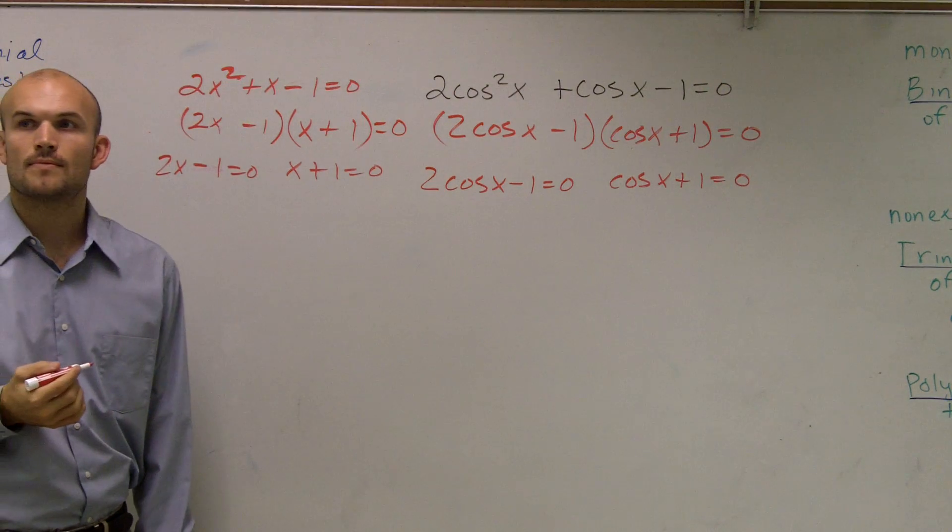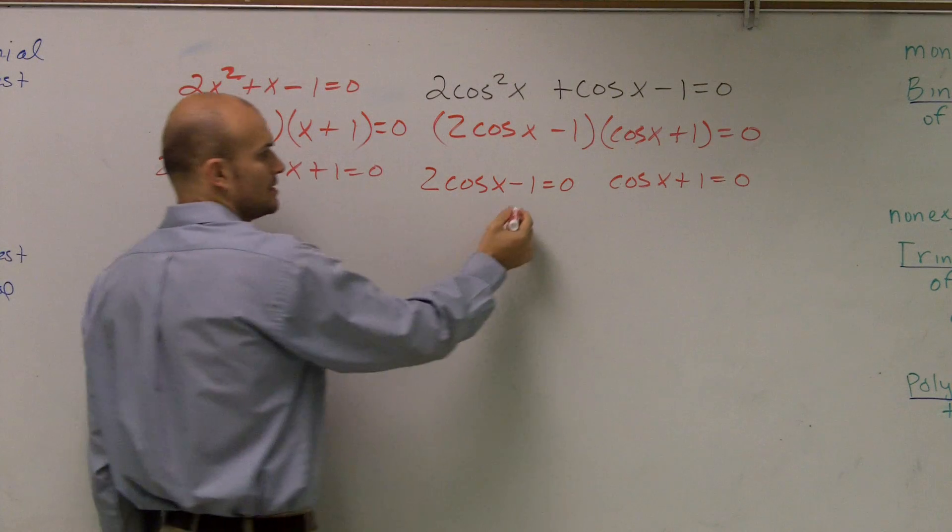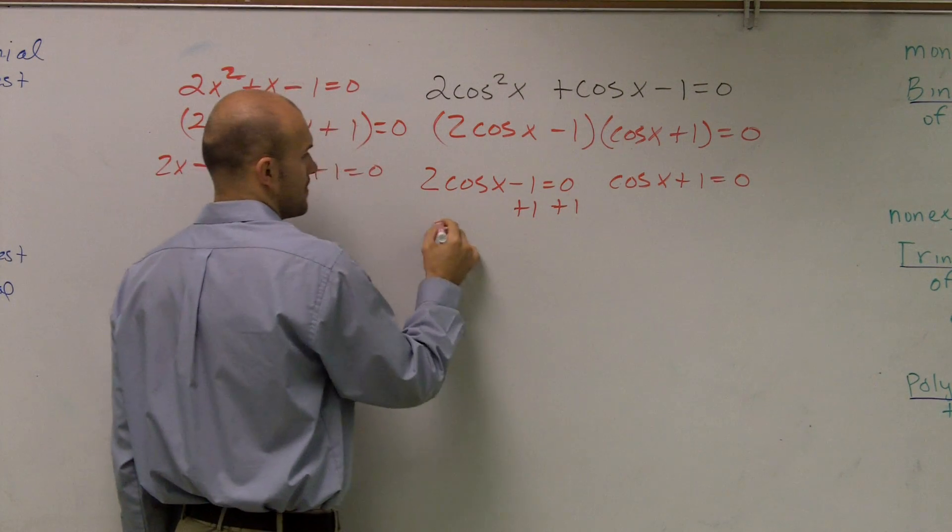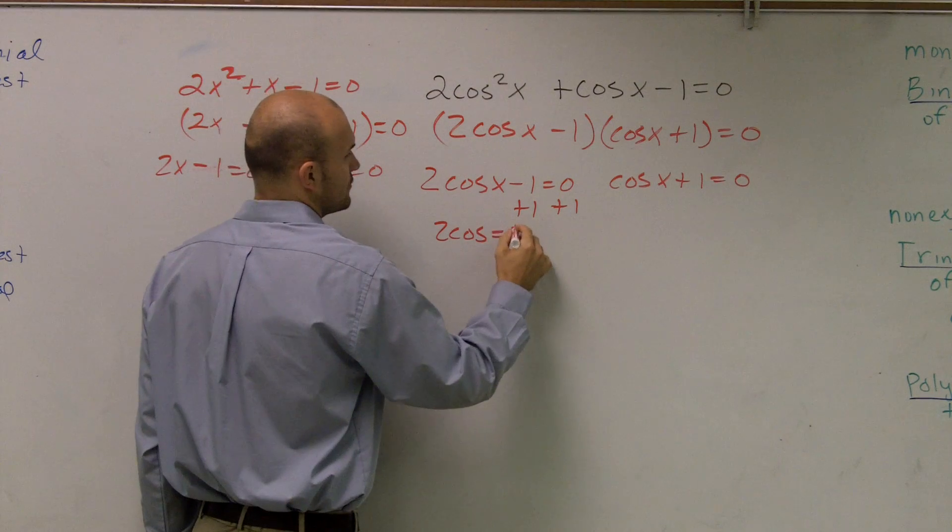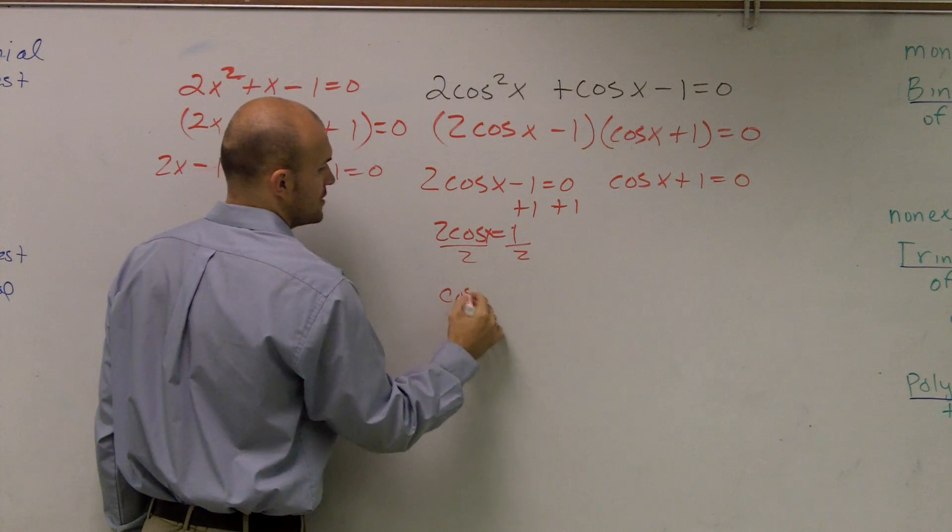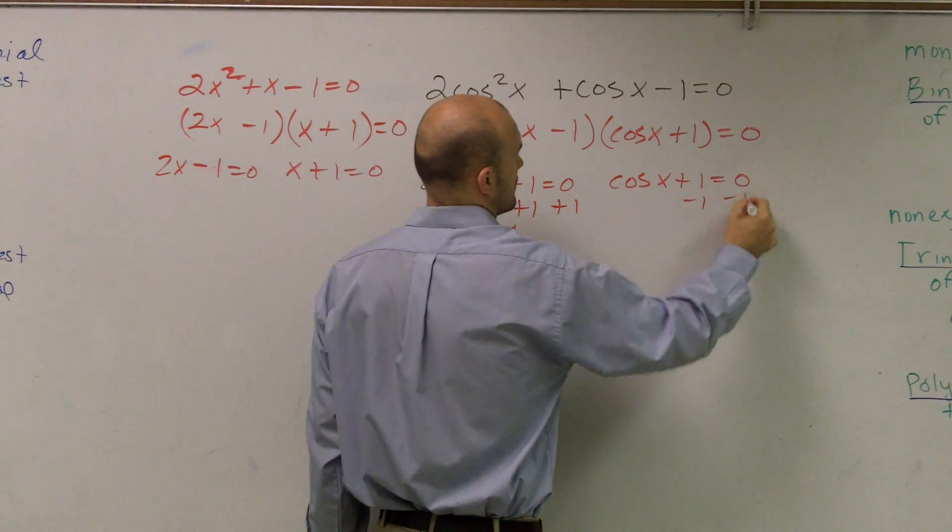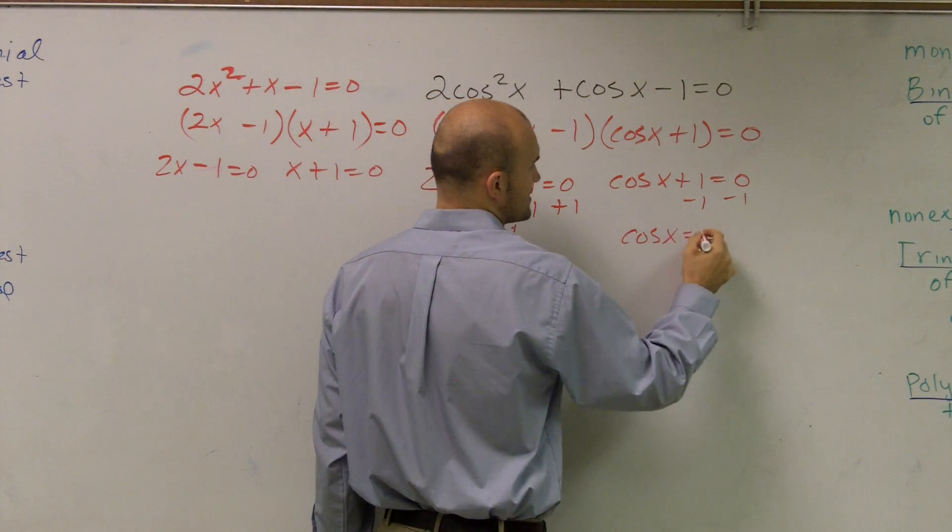OK? So you write it into two different things. Yep. I'm going to have two different solutions here. So I can add 1. 2 cosine equals 1, divide by 2, cosine of x. So I have cosine of x equals a positive one-half, and I have cosine of x equals negative 1.